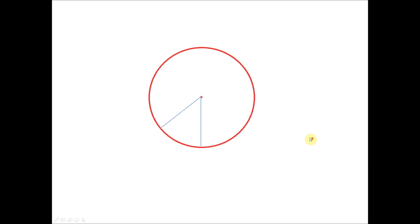Next, we form two angles at the center. When the arc length is 5 cm we get an angle of 40 degrees at the center. When the arc length is doubled to 10 cm, the angle at the center is doubled as well — 40 times 2 becomes 80 degrees.